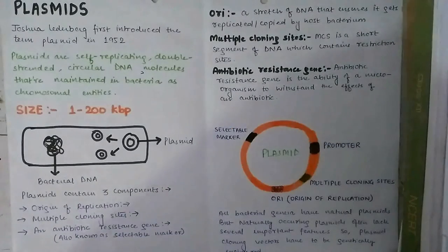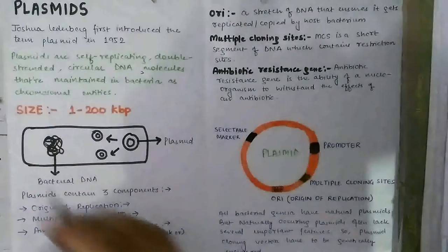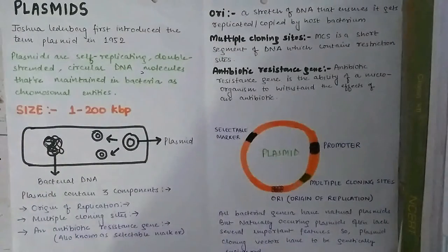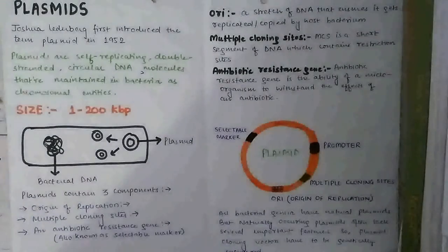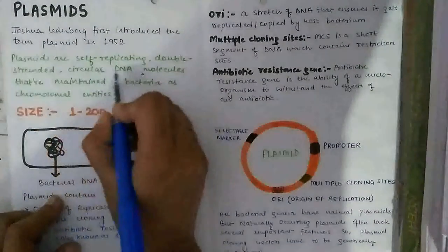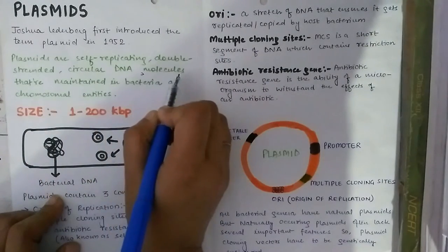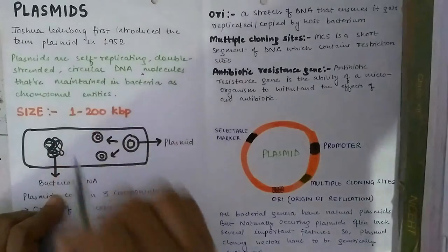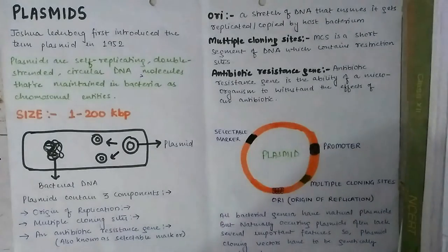The size of the plasmid varies from 1 to 200 kilobase pairs. Plasmids are most commonly found in bacteria but are sometimes present in archaea and eukaryotic organisms. Plasmids are self-replicating, double-stranded, circular DNA molecules that are maintained in bacteria as extra-chromosomal entities.